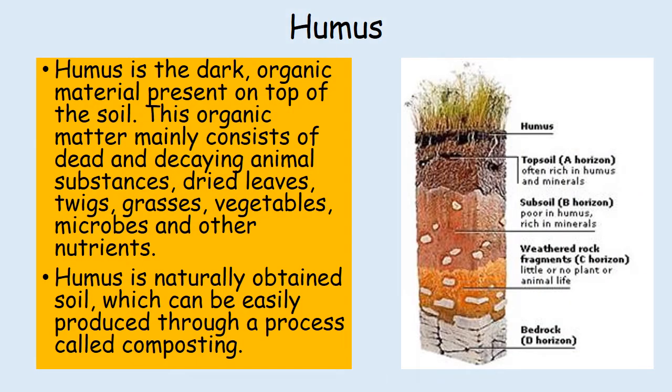Humus is the dark organic material present on top of the soil. This organic matter mainly consists of dead and decaying animal substances, dried leaves, twigs, grasses, vegetables, microbes and other nutrients. Humus is naturally obtained soil which can be easily produced through a process called composting.